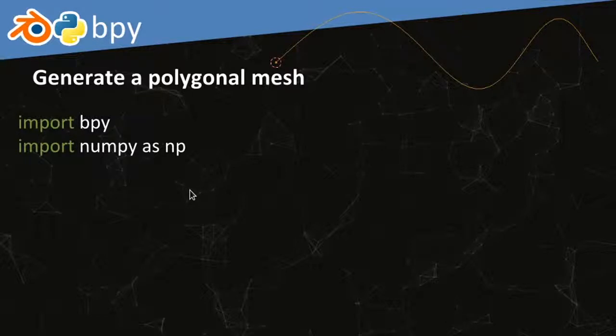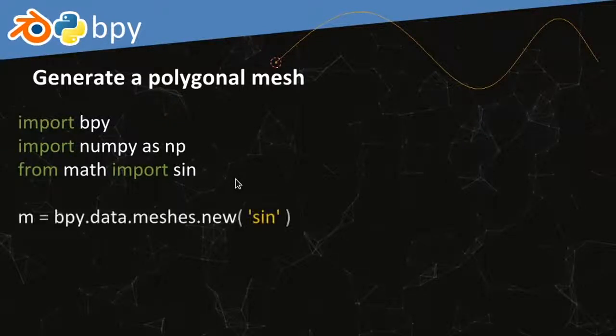Let's go to a slightly more complex example, again with a sine curve, but this time we're going to generate a mesh instead of just a bunch of cubes — a specific curved mesh. I'm importing numpy here for a simple function. As I said, a mesh has three types of elements: vertices, which are points; edges, which are the lines connecting vertices; and faces, which enclose the mesh within a shell. We're not using faces here.